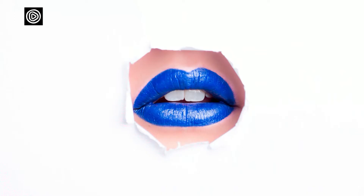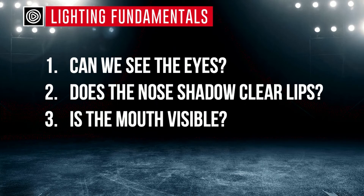You want to notice that the nose also has a shadow. Sometimes I see people sitting in a room with a direct overhead light, which makes their nose very hot like a triangle and creates a terrible shadow underneath. You always want to be aware of what the nose shadow is doing — if it's too long and it falls on the mouth, which is what we really want to see, then we're in trouble. So the checklist is: can you see the eyes, is the nose shadow clearing the lips, and is the mouth visible?